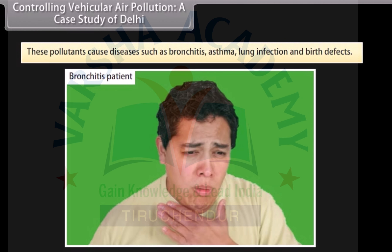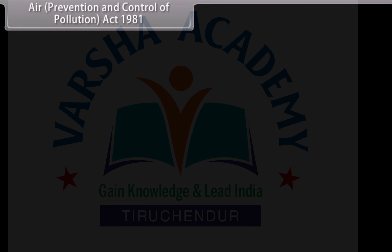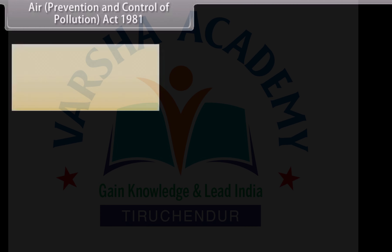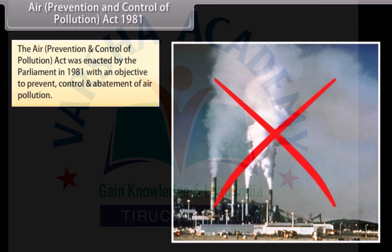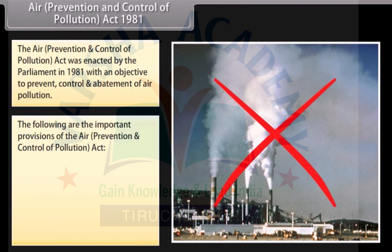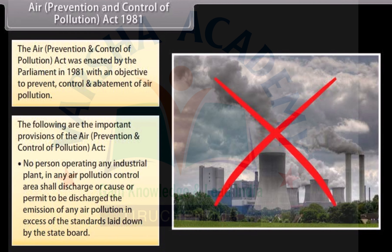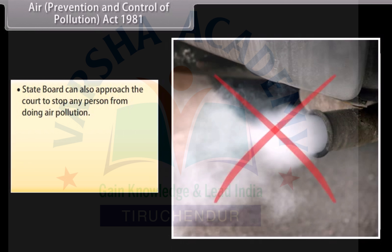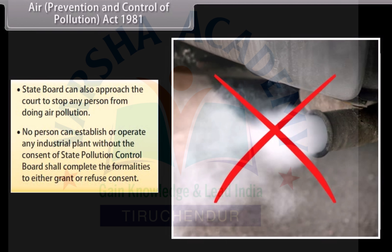These pollutants cause diseases such as bronchitis, asthma, lung infection and birth defects. The Air Prevention and Control of Pollution Act was enacted by Parliament in 1981 with an objective to prevent, control and abatement of air pollution. No person operating any industrial plant in any air pollution control area shall discharge emissions in excess of the standards laid down by the state board. The state board can also approach the court to stop any person from causing air pollution. No person can establish or operate any industrial plant without the consent of the State Pollution Control Board.